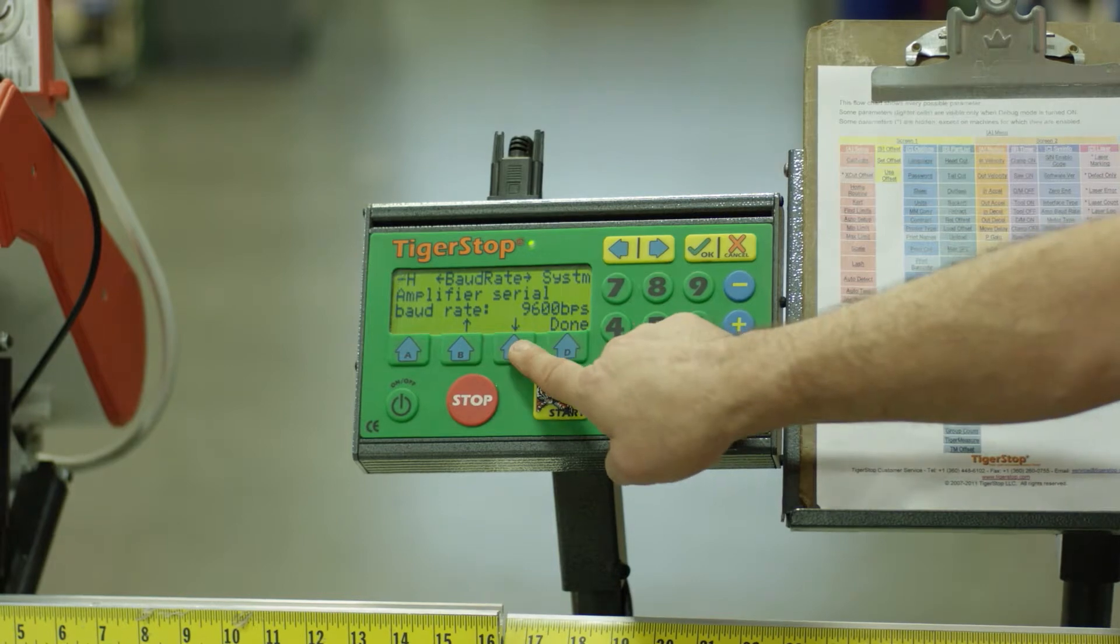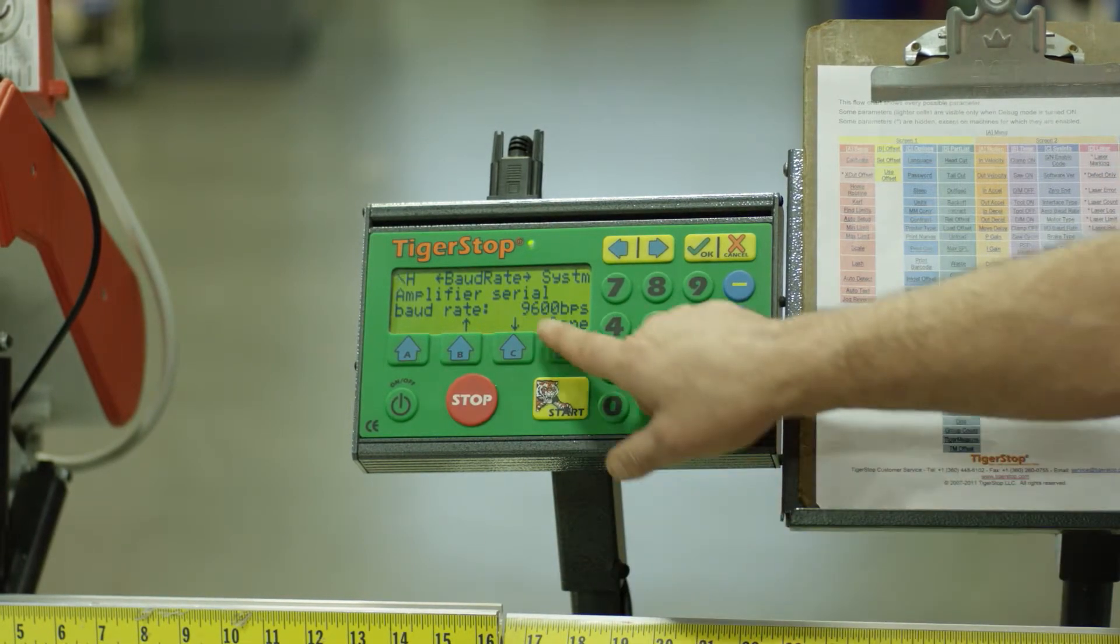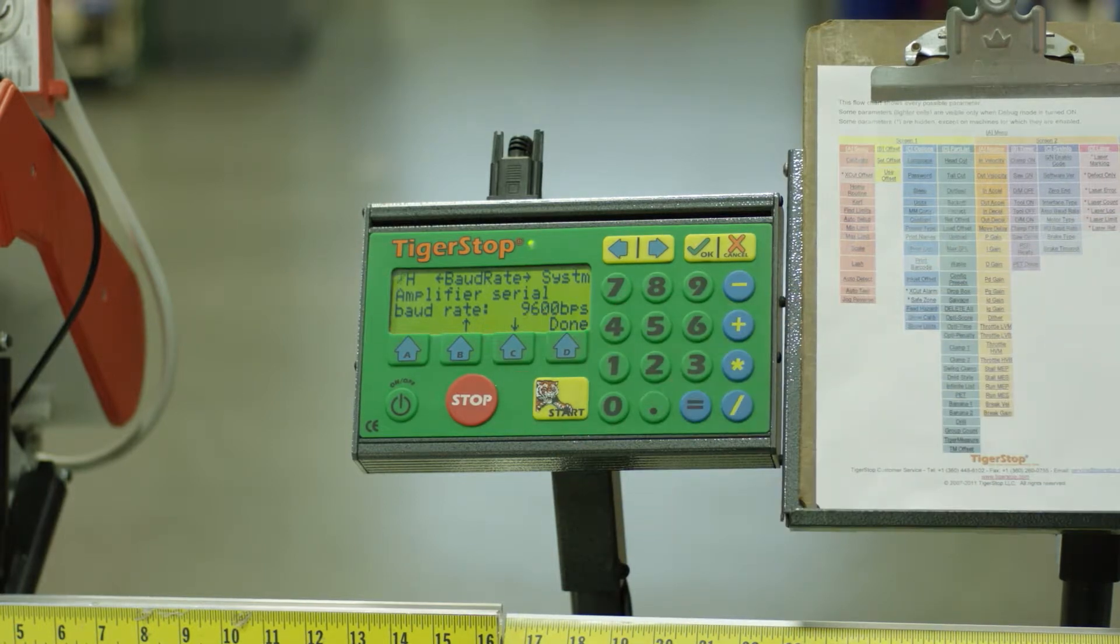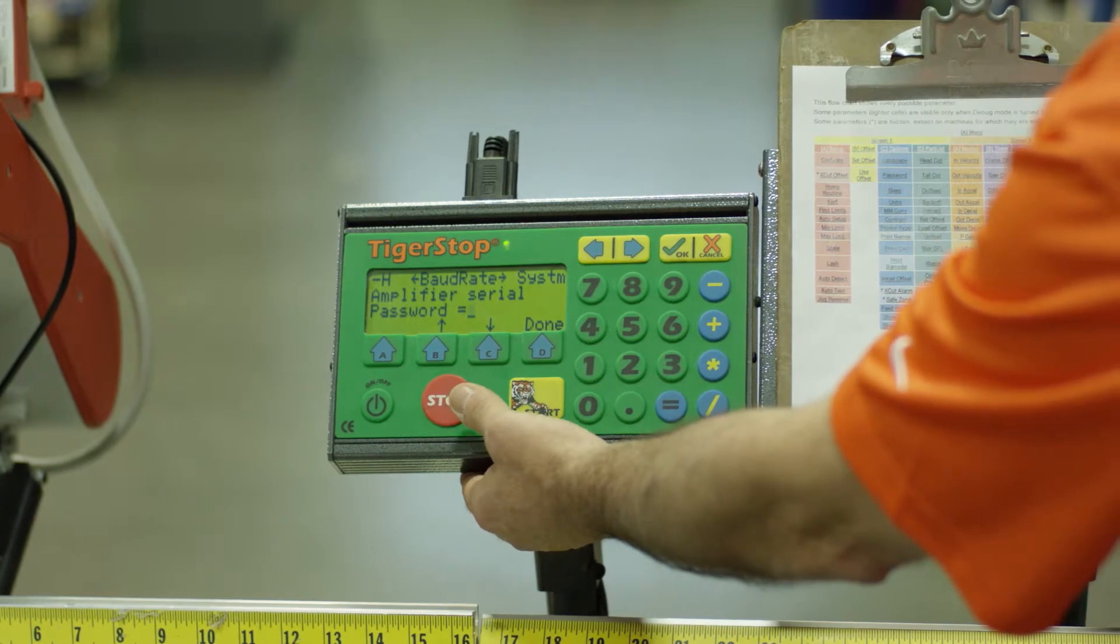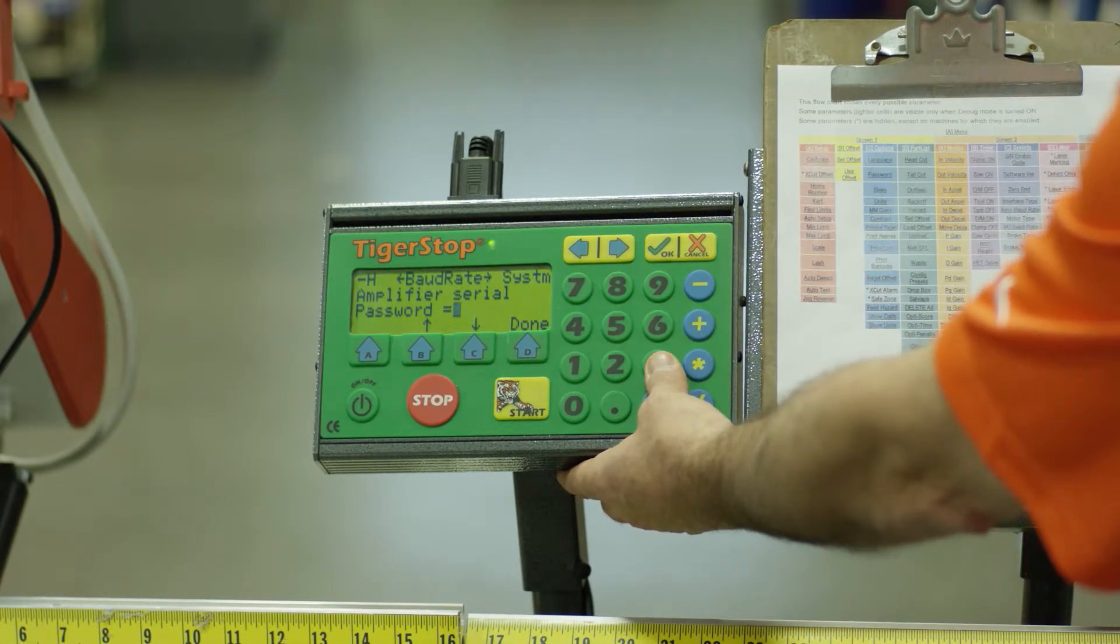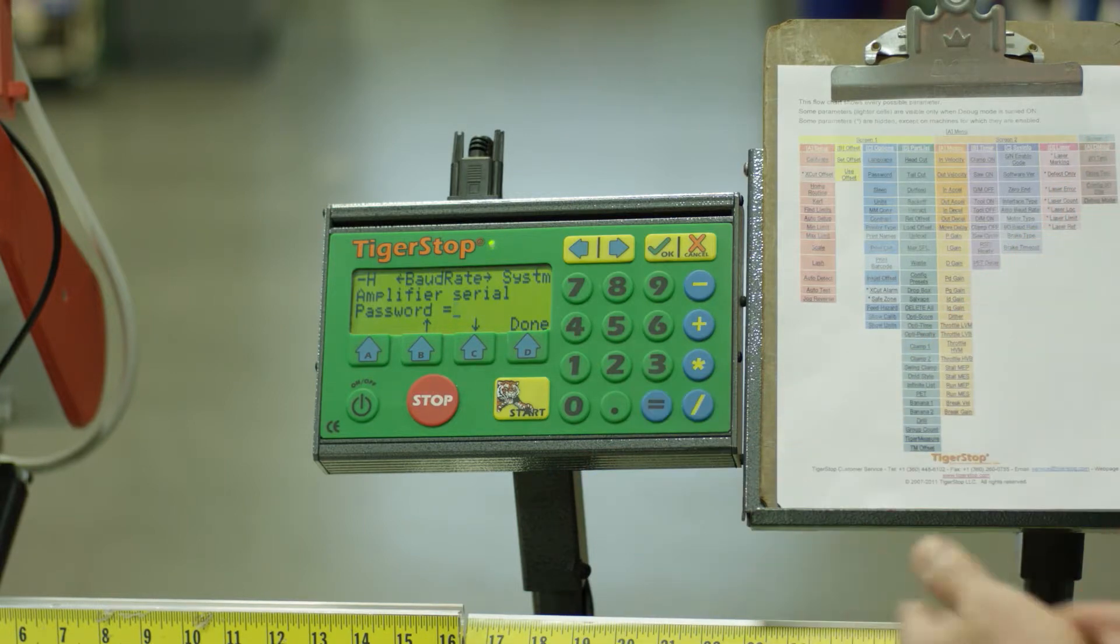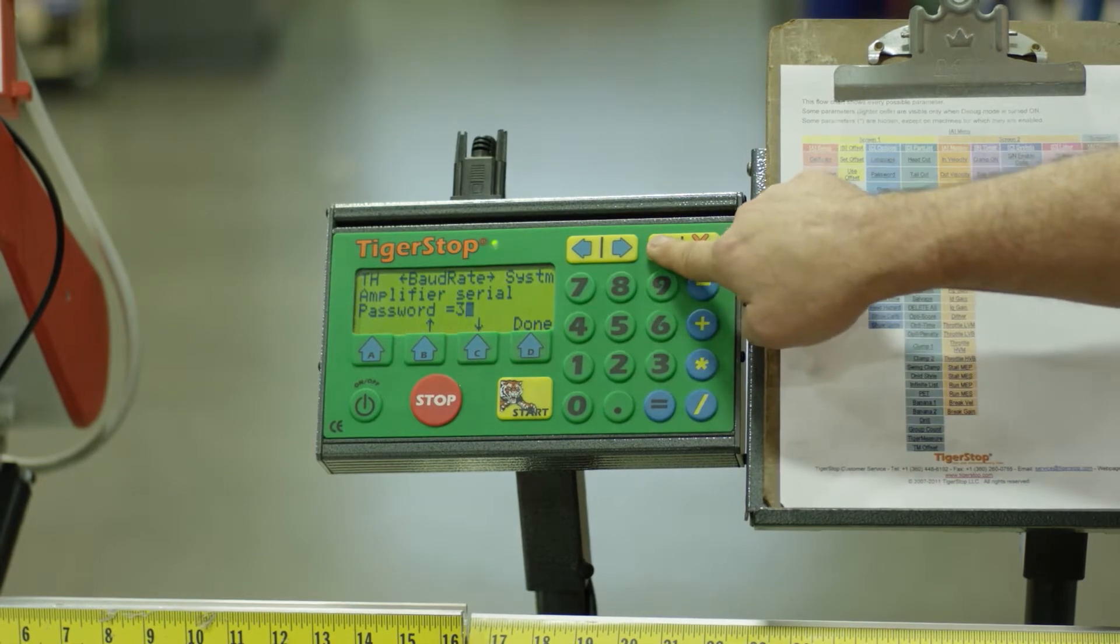You will be able to choose what that baud rate is for your particular application. Here it's at 9600. You will see B corresponds to going up, C corresponds going down. Let's see what is available. When I press this button, it's going to ask me for the password to ensure that I've not accessed and changed a piece of data inadvertently.